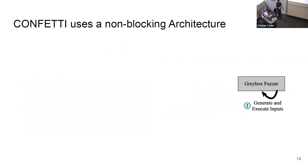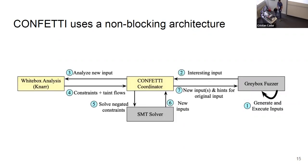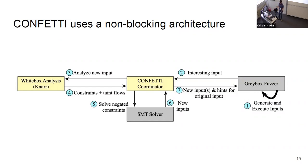One major benefit of gray box fuzzers, whether parametric or otherwise, is their speed, and Confetti is designed to leverage that speed without hindering it. The gray box fuzzer portion of Confetti is its own process and constantly generates inputs and executes the system under test. We have a separate process called the Confetti coordinator, which receives interesting inputs and delegates work to our white box analysis platform, NAR, which is its own separate process. NAR performs taint tracking — we've extended it to build constraints and path conditions — which it sends back to the Confetti coordinator. The coordinator then leverages an SMT solver to solve for new inputs and send targeted hints or global hints back to the gray box fuzzer, all while the gray box fuzzer continues running.